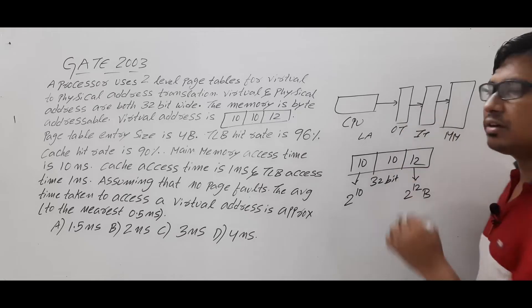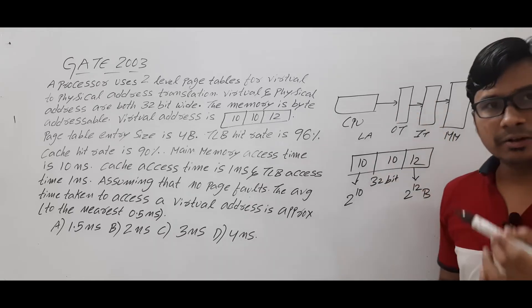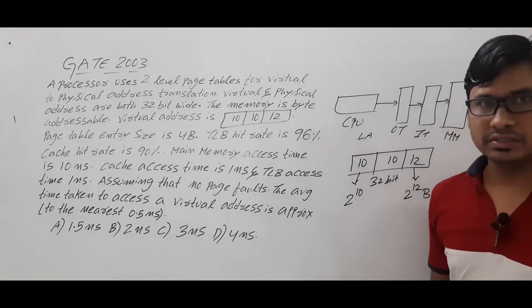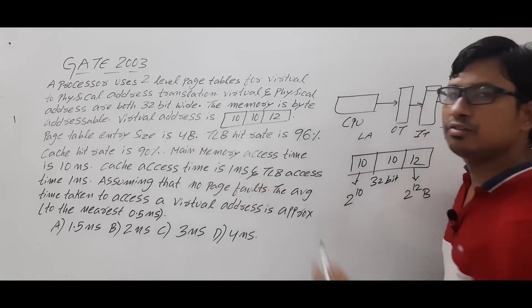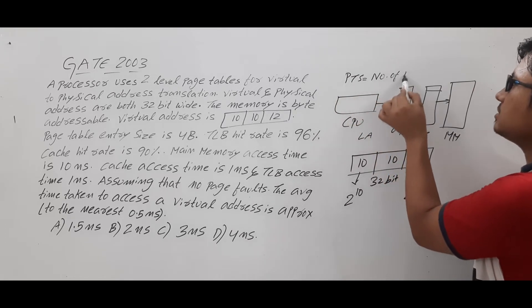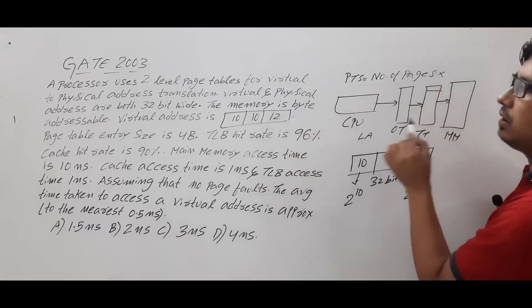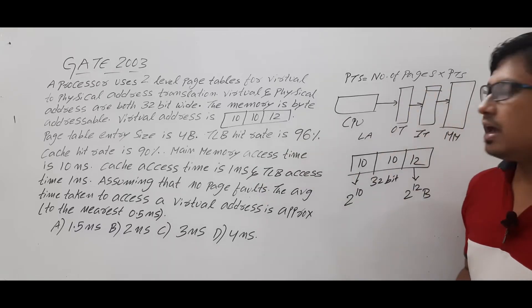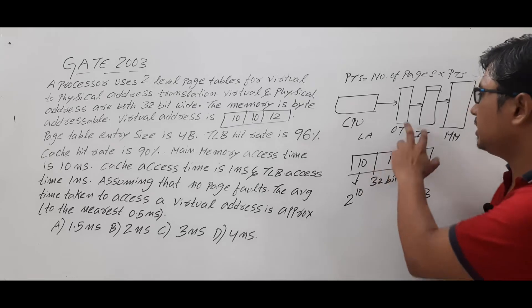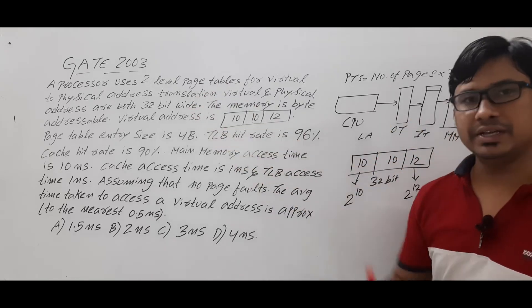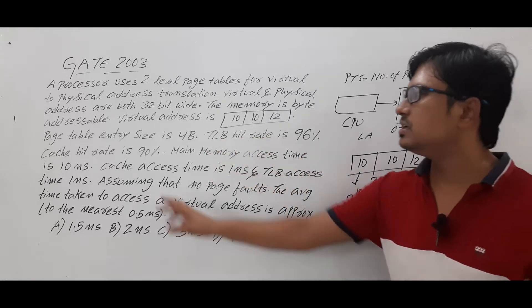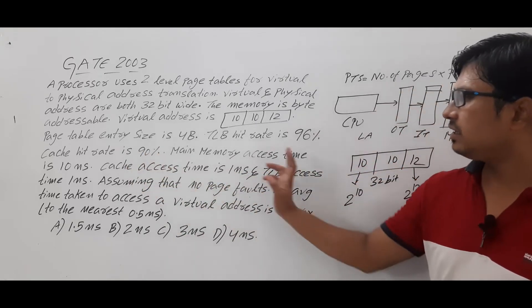The number of entries in the inner page table equals the number of pages in the process, and each entry size is 4 bytes. So page table size equals number of pages multiplied by page table entry size. Because this total size is greater than one page/frame size, we use two-level paging. The TLB hit rate is 96%, cache hit rate is 90%, and main memory, cache memory, and TLB access times are also given.